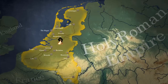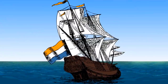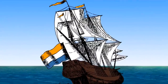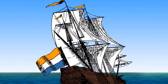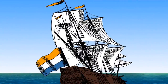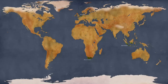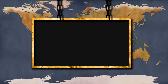During and after this conflict, the Dutch focused on creating colonies and trading posts around the world. But how did their colonial empire collapse? We will find this answer in this video.